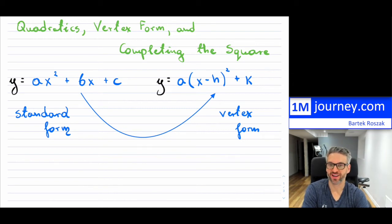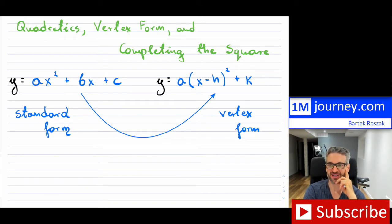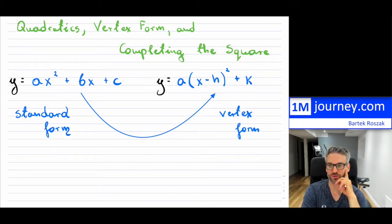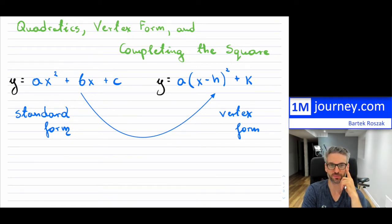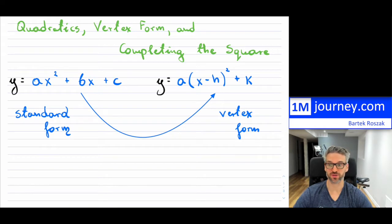Welcome back. So completing the square — this is one of the final topics with respect to quadratics, but definitely one that some students struggle with. Hopefully in this video I'm going to show you what completing the square is all about, and I'll do it through examples. The ultimate goal is: when you have quadratics, there are two standard forms people use, which is the standard form — ax squared plus bx plus c — and we know that it looks like a parabola.